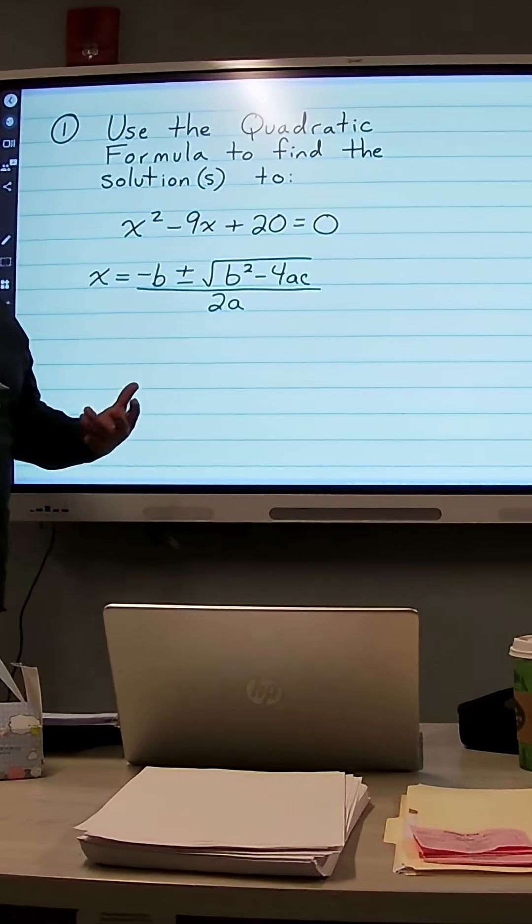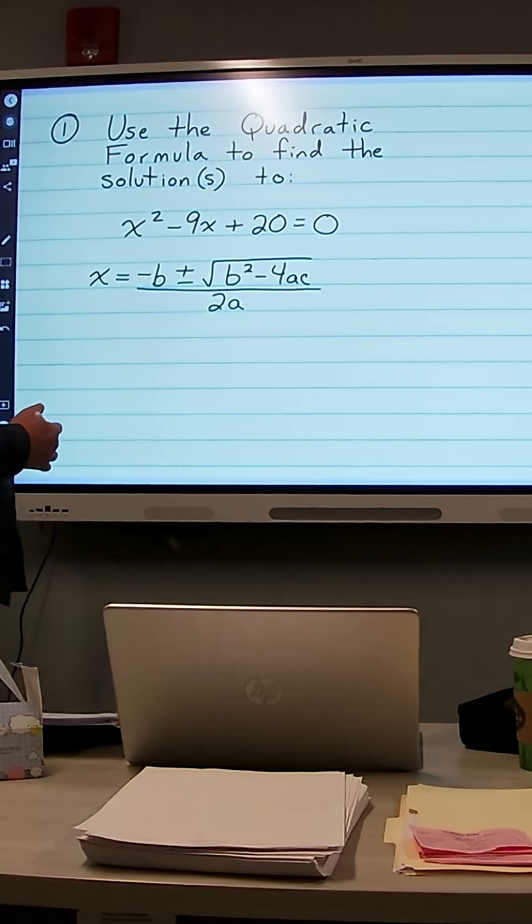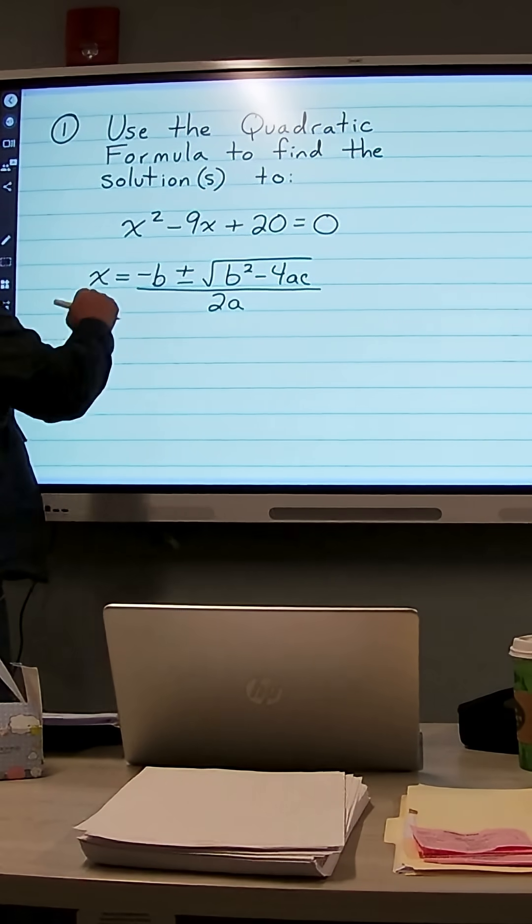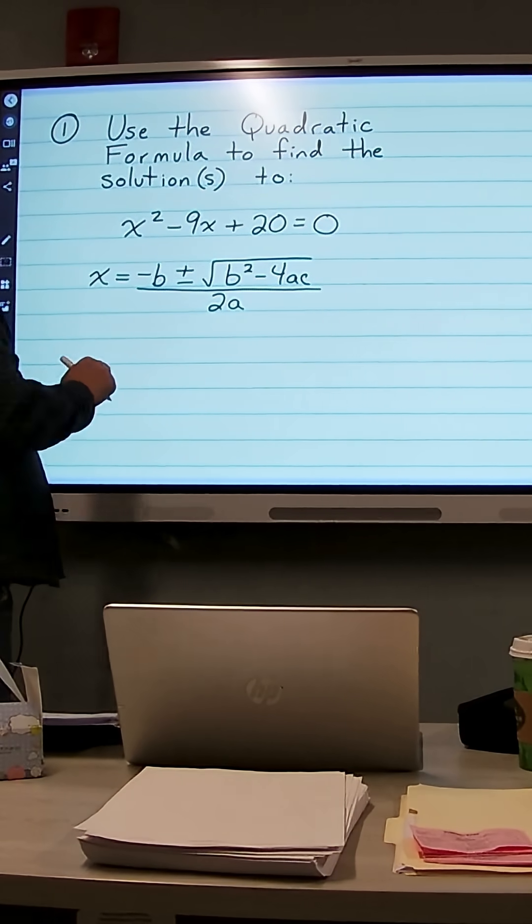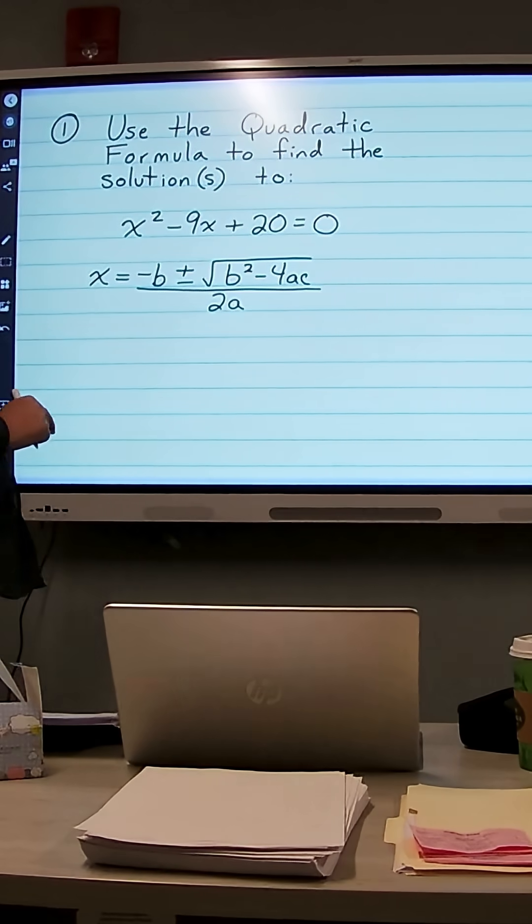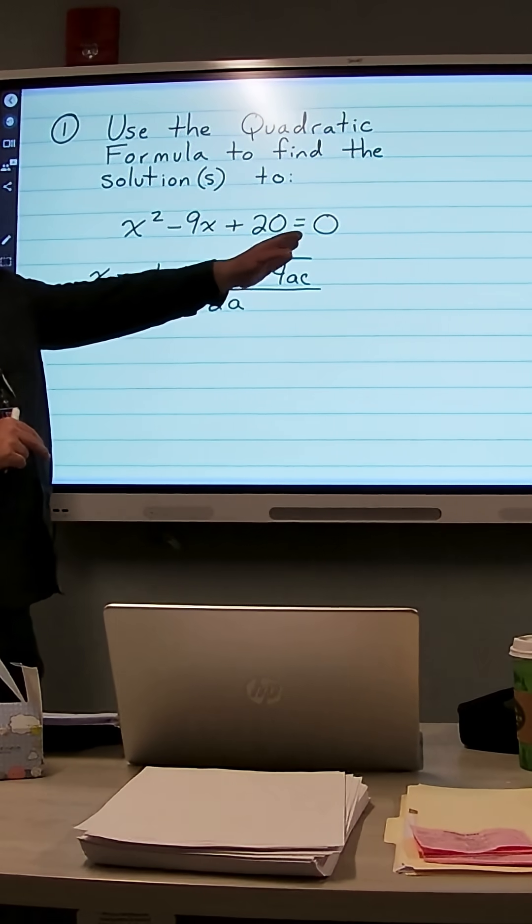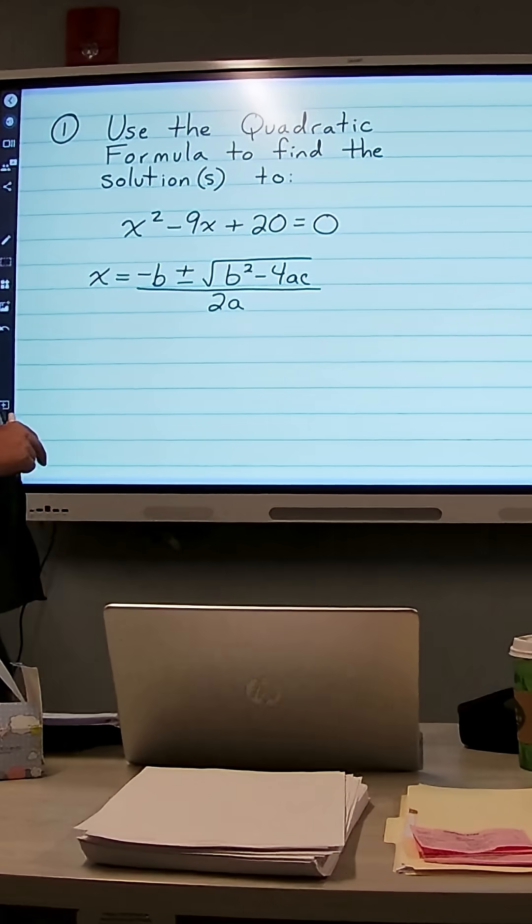So what do a, b, and c refer to? Well, a is the number in front of x squared, b is the number in front of x, and c is the constant by itself. And that works when one side of the equation is equal to 0 like we have here.